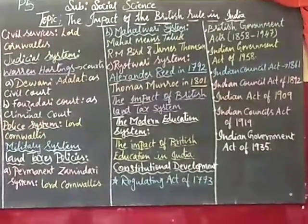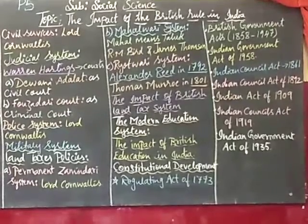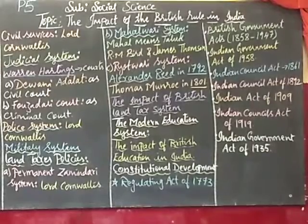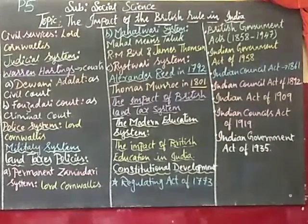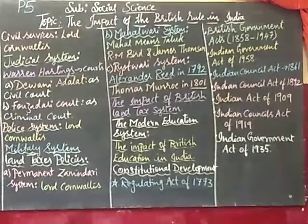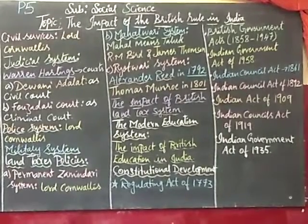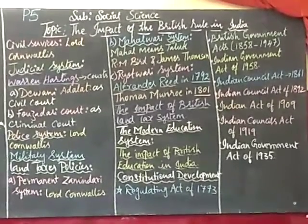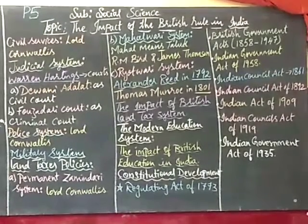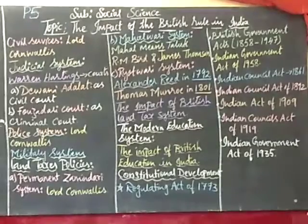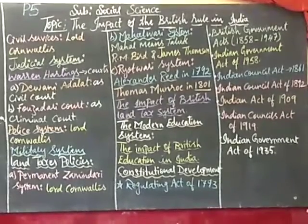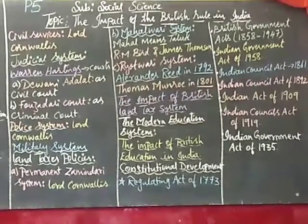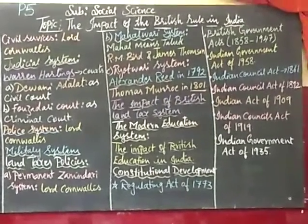Under the Charter Act of 1833, the Governor General of Bengal was given the title of Governor General of India. He had the power to direct, control, and supervise all trade in India. The central government of Bengal had the final right to decide issues like war, peace, and diplomatic relationships. Taking the help of the central government, the Governor General could discuss matters of war, peace, and other issues.